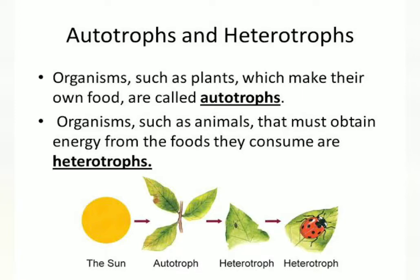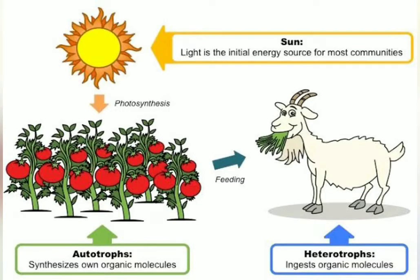All other animals, including human beings, dogs, goat, and cow, depend on plants for their food — they are called heterotrophs, and this kind of nutrition is called heterotrophic nutrition. So there are two types of nutrition: autotrophic nutrition and heterotrophic nutrition. Autotrophs prepare their food by photosynthesis, but animals like the goat depend on plants for their food, so the goat is an example of a heterotroph.